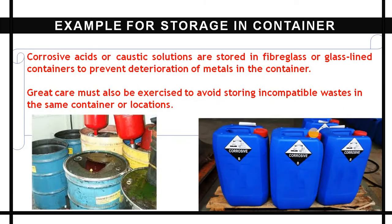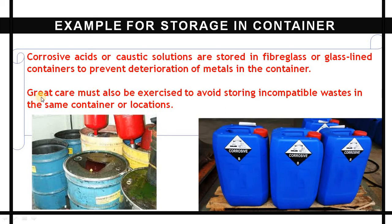As an example for storage: corrosive acids or caustic solutions are to be stored in fiberglass or glass-lined containers to prevent the deterioration of the metal in the container. Acidic-type hazardous waste must be containerized in glass-lined containers to prevent metal deterioration.